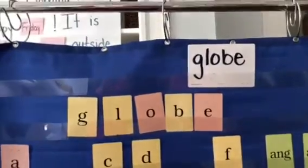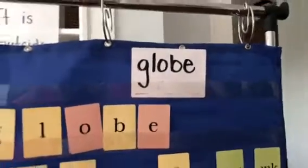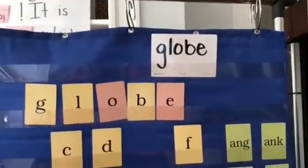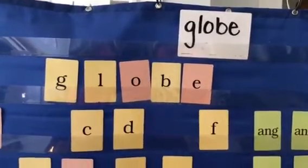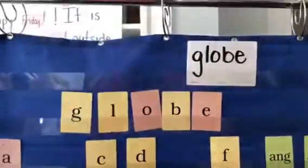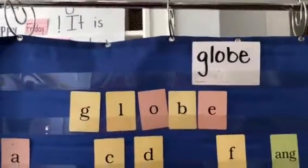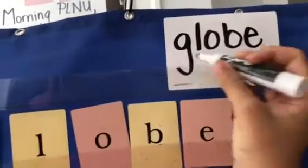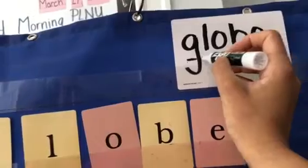Now, how can I mark up the word globe? How can I mark it up? Tell me at least two things you know I need to mark. Tell me in three, in two, in one. One of the things that needs to get marked up is the consonant blend. So I'm going to underline the G and the L.